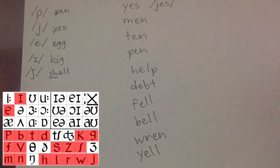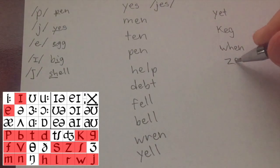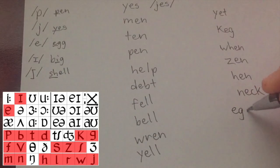This is like a bird, a wren. Yell. I know we have a lot of L's. Now, yet, keg, like a keg of beer. Wen, zen, hen, neck, egg, deck, speck, wreck.